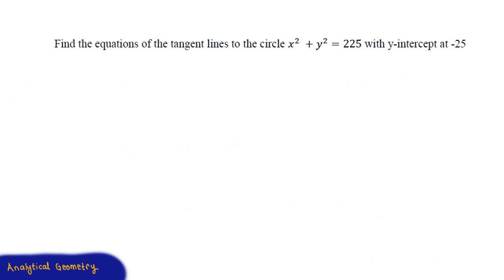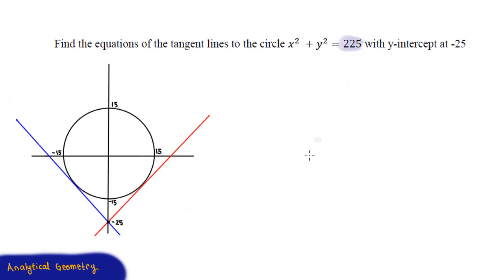That y-intercept is talking about the y-intercept of the tangent lines. If we sketch this situation out, we see that the radius squared is equal to 225, which means the radius is equal to 15 units. That's why this circle goes up by 15 units, down by 15 units, to the right by 15 units, and to the left by 15 units. We are told that these two tangent lines have to have a y-intercept at minus 25, and we need to work from there to find the equations of the tangent lines.